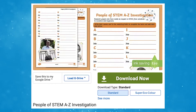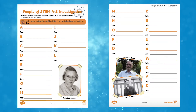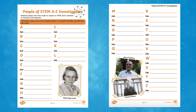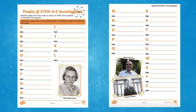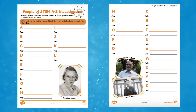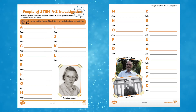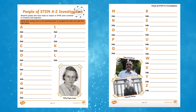Another fabulous activity that you can use alongside these STEM resources is our People of STEM A-to-Z investigation. You can use this to inspire your students with a research project based on the people in STEM. Your students will need to find a person whose name starts with each letter and who has made an impact in STEM.